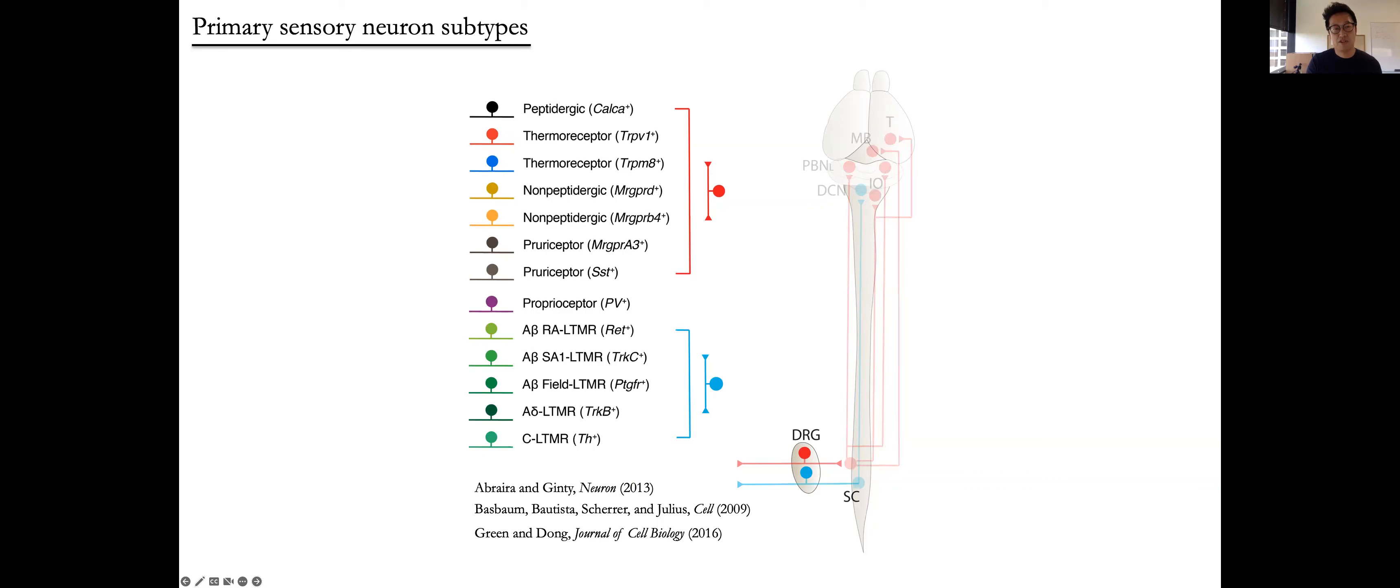In the field, these are the genes that we use to label each of these subtypes of primary sensory neurons. We have genetic handles for each one of them.